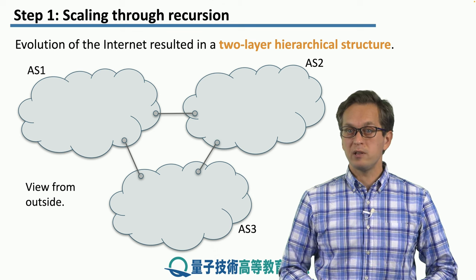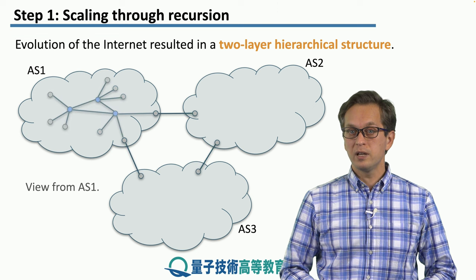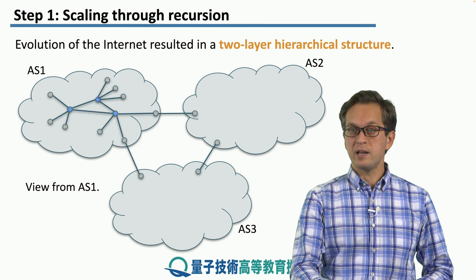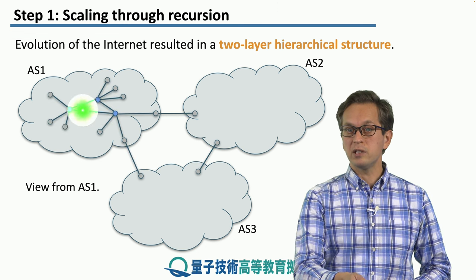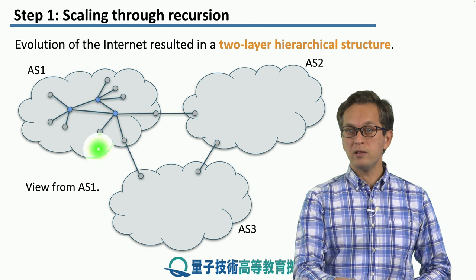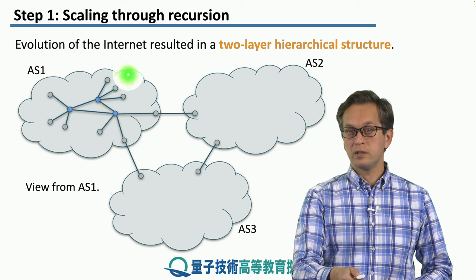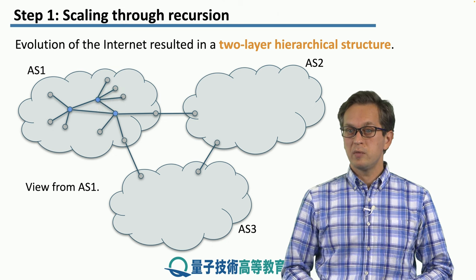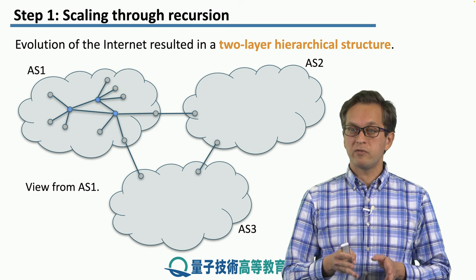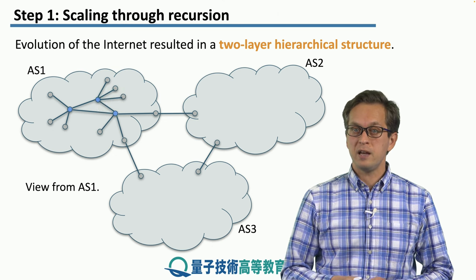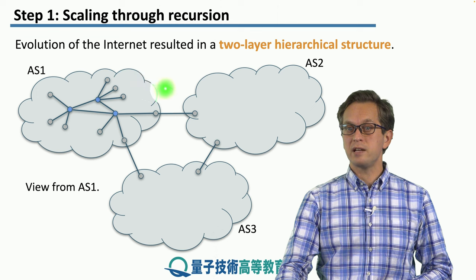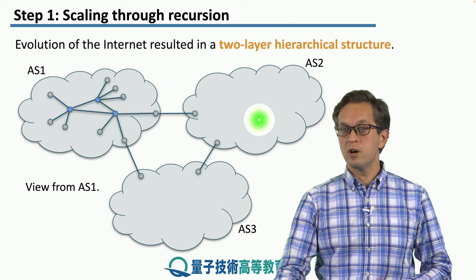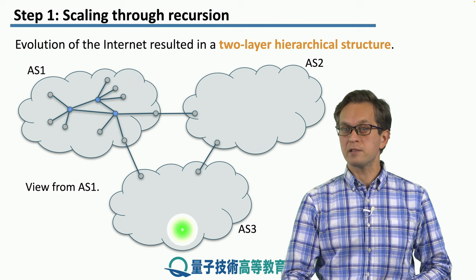Once we step into AS1, then we can see that there are some routing nodes, some end nodes, and so on. But still, even from inside AS1, we cannot see what's inside AS2 or even AS3.